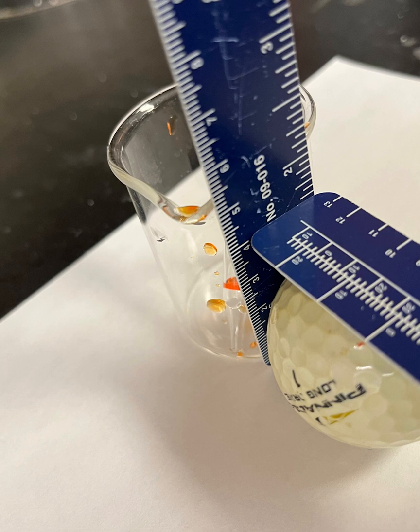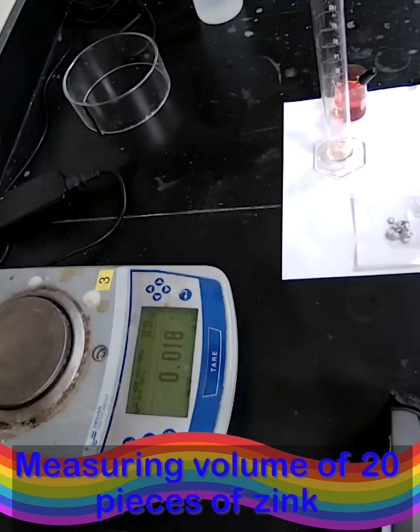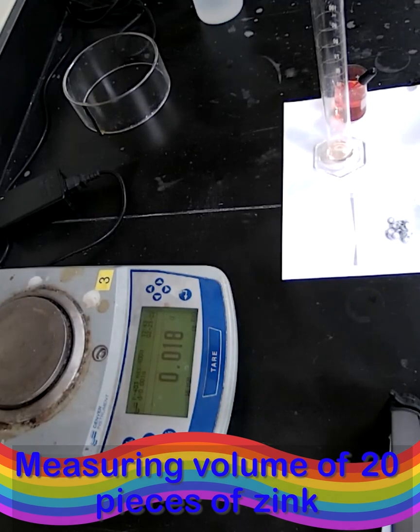To get the volume of a golf ball, assume it is spherical. Measure the diameter using a ruler, record that number from the image, and calculate the volume using the formula for volume of a sphere.